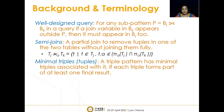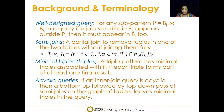A triple pattern is said to have minimal triples associated with it if each triple forms part of at least one final result. There is a property of cyclicity or acyclicity of inner joins which I will not go into in detail in this talk due to time constraints. But the property is such that if an inner join query is acyclic, then a bottom-up followed by top-down pass of semi-joins on the graph of tables leaves minimal triples in the query's triple patterns.